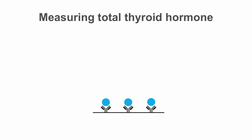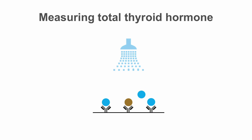Most assays for measuring total thyroid hormone are competitive immunoassays. In these assays, we have a radiolabeled thyroid hormone analog that's bound to an antibody-coated plate. The patient's sample is added, and the patient's thyroid hormone will displace the radiolabeled analogs. The sample is then washed, and the displaced analog is rinsed away, leaving the bound analog to be measured.